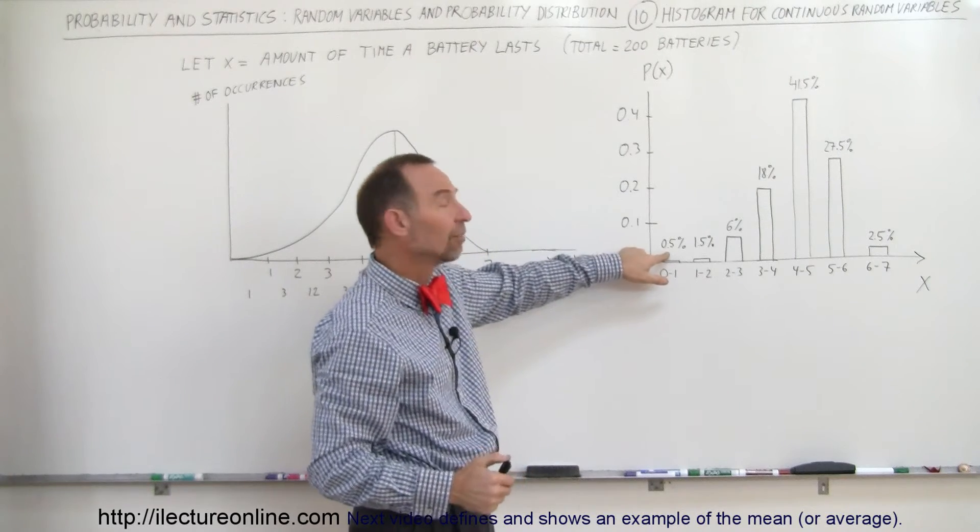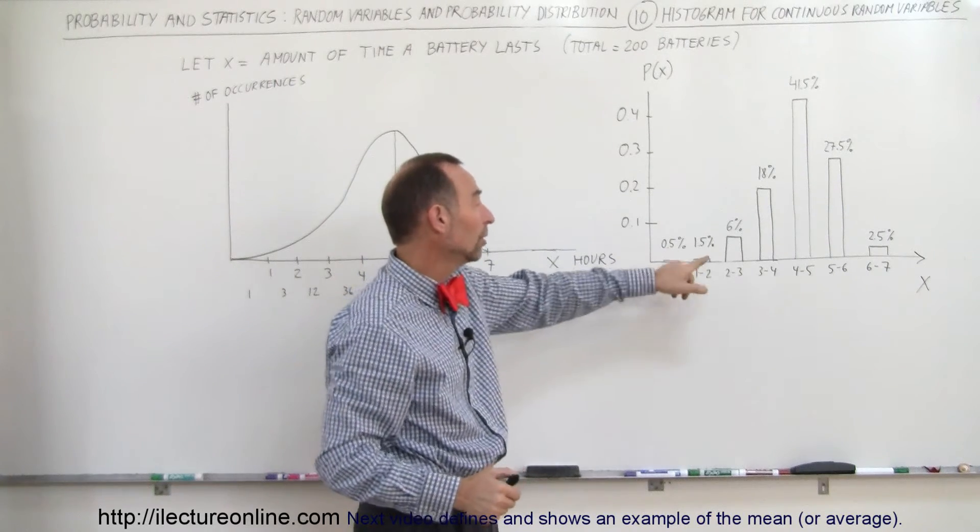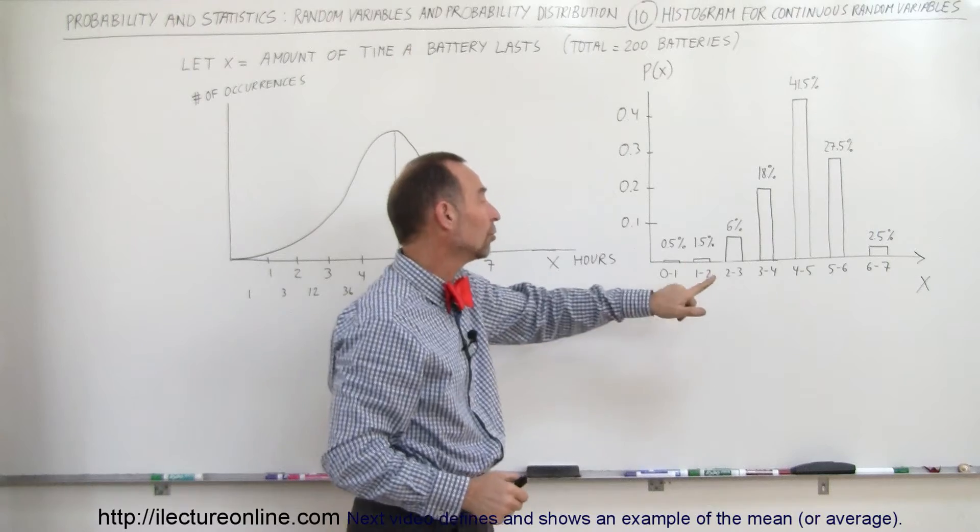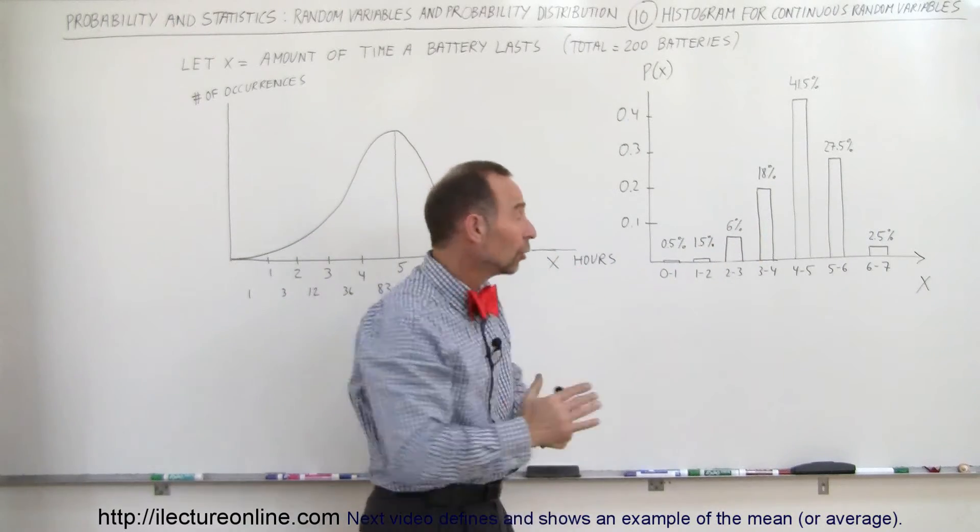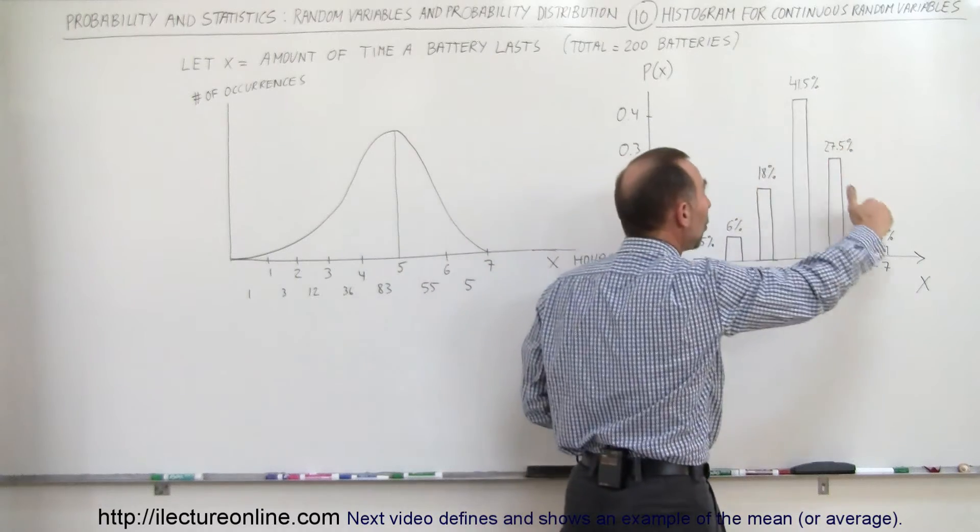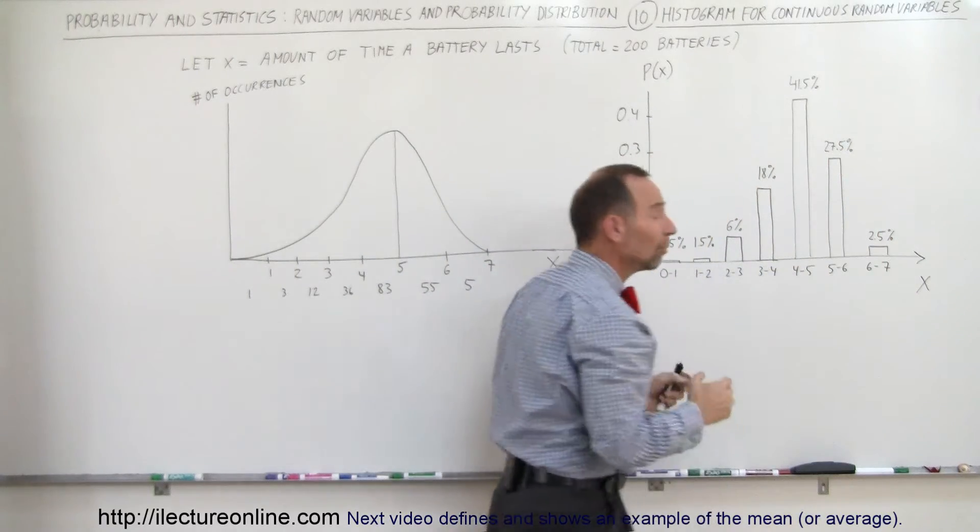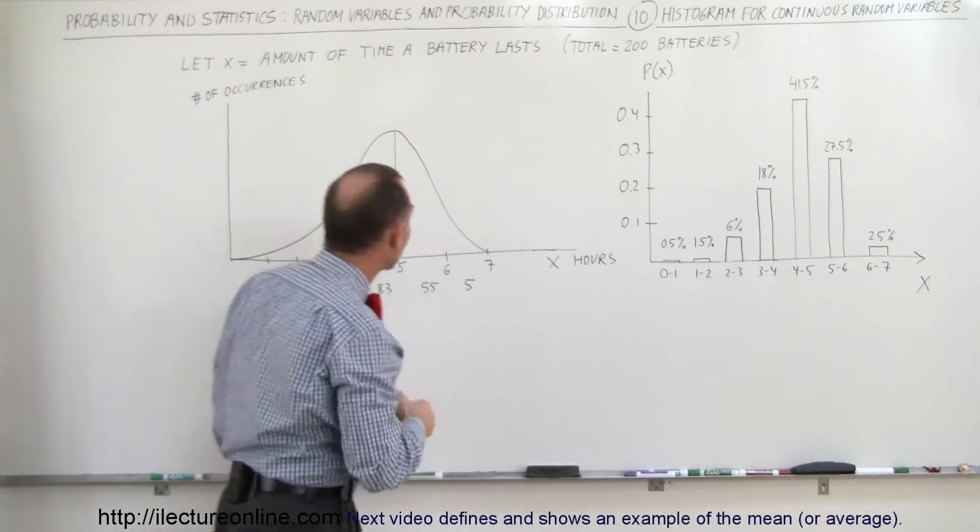You can see that only a half percent of all the batteries will last between zero and one hour, one and a half percent between one and two, six percent between two and three, and so forth. The total should add up to 100%, which equals one, so if you add up all the probabilities, you should get one.